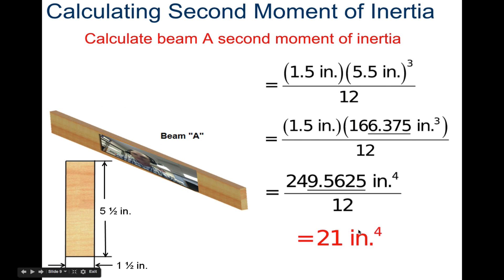That's why we have inches to the fourth. If you have an inch and a half wide by five and a half inches tall, B times H cubed divided by 12, you get a total of 21 inches to the fourth. That is your second moment of inertia for beam A in that orientation, 21.